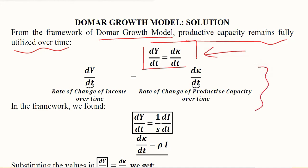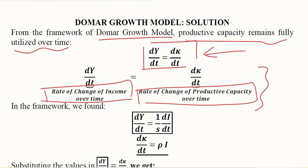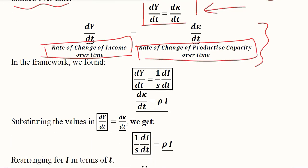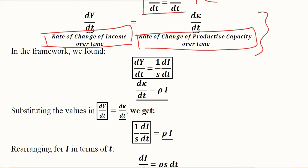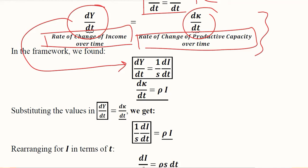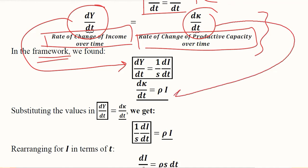The dynamic equilibrium condition states that the rate of change of income over time remains equal to the rate of change of productive capacity over time. We also have the values of these two derivatives, which were found in the framework developed in the last video. Now we can put both of these values together and extract the value of investment to develop its time path.